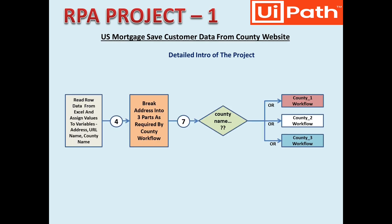Now I am explaining the entire transaction flow. First, we will read the data from Excel — the first and second boxes are covered in the single Read Excel workflow. You will have four different data points available in Excel: the address, the URL, the county name, and the owner name. From there, we will break the entire address into three different parts, making the total number of variables seven. We will then check the county name and call only that particular county workflow to perform the rest of the actions, with one output status written by the county workflow.